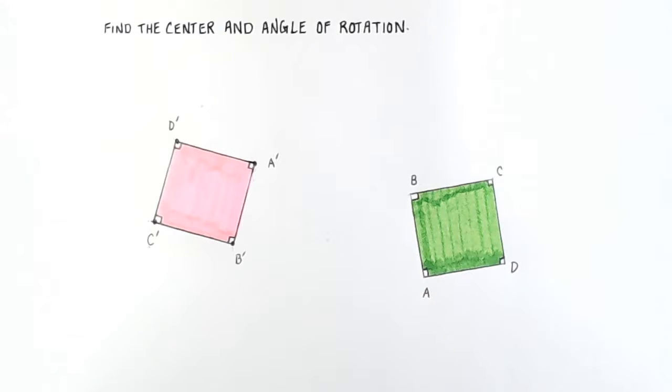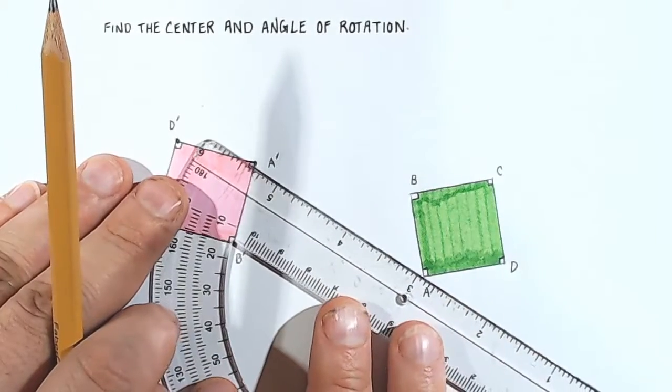And what we're trying to find is we're almost trying to work in reverse. We're trying to find out where the center of rotation was and what the angle of rotation is. And so, the way we're going to do this is we are going to construct something called a perpendicular bisector between two corresponding points. What that means is we're going to find two corresponding points. For example, we'll start with A and A prime because those points correspond. And we're going to draw a line segment connecting them.